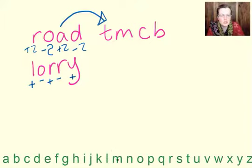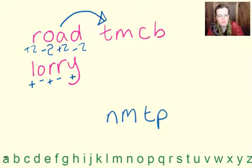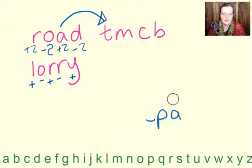So L plus two, one, two, N. O back two, one, two, M. R plus two, one, two, T. R minus two, one, two, P. R plus two, one, go round the alphabet. R to A. Now that is a code and we wanted a code, didn't we? So let's get rid of this.